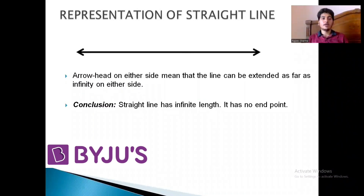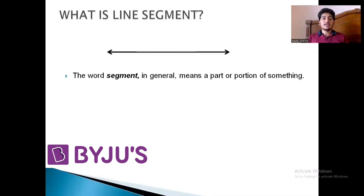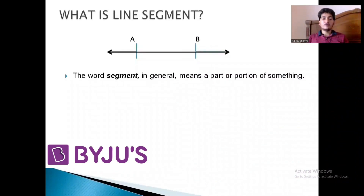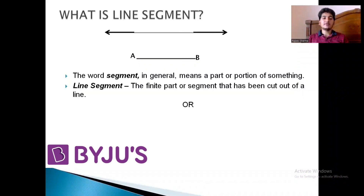Moving ahead, let us understand what is a line segment. The word 'segment' means a portion or part of something. So a line segment is a part of a straight line. For example, if we take a straight line and mark two points A and B on it, the part we cut out — the AB segment — is called line segment AB. We can conclude that a line segment has two end points and it has finite length.